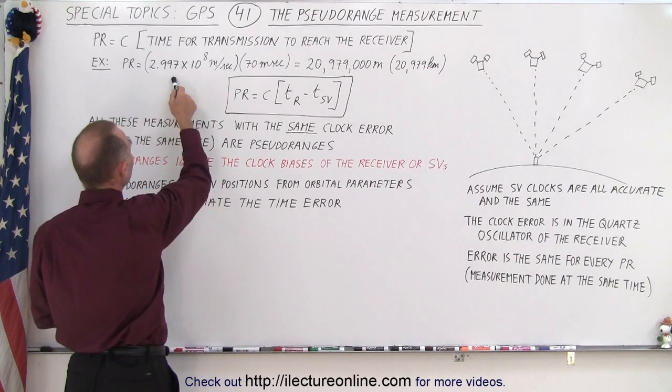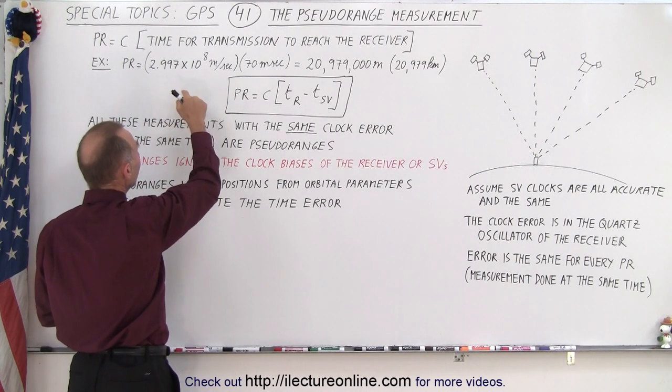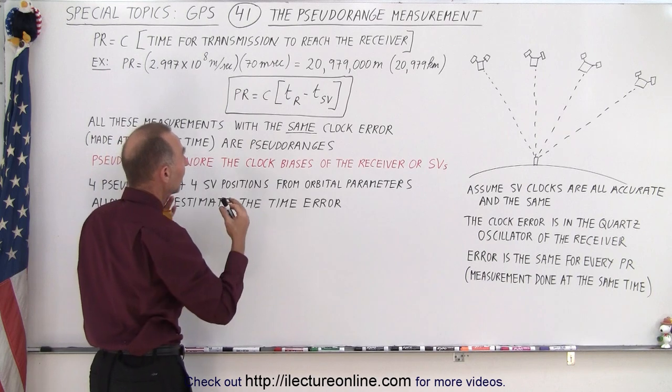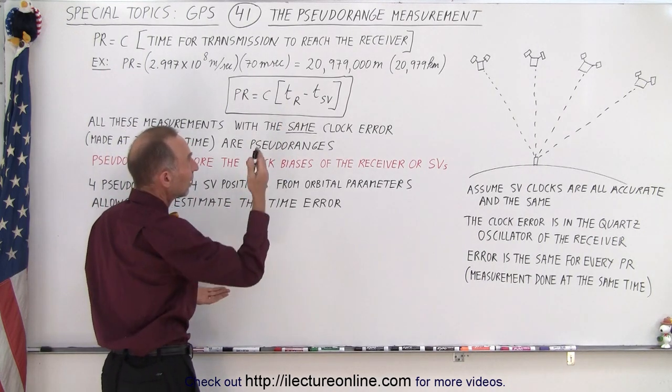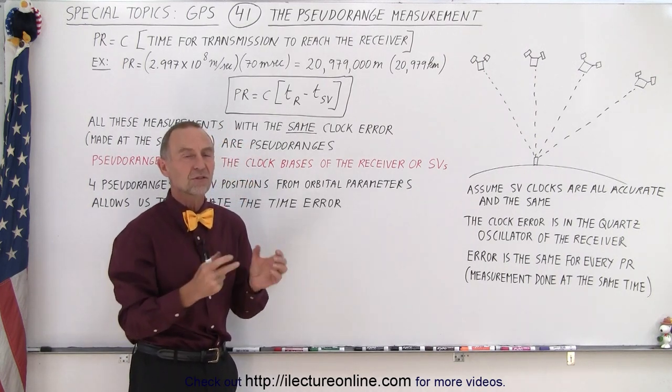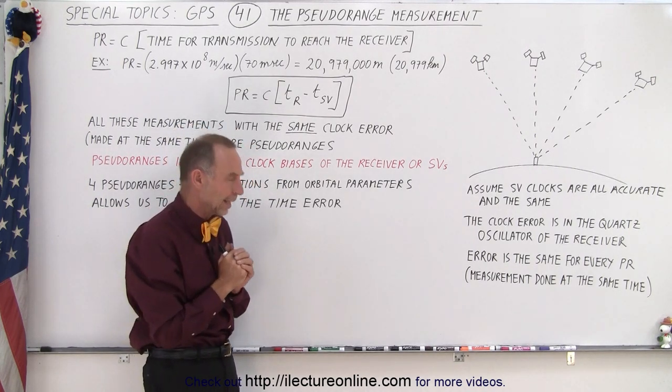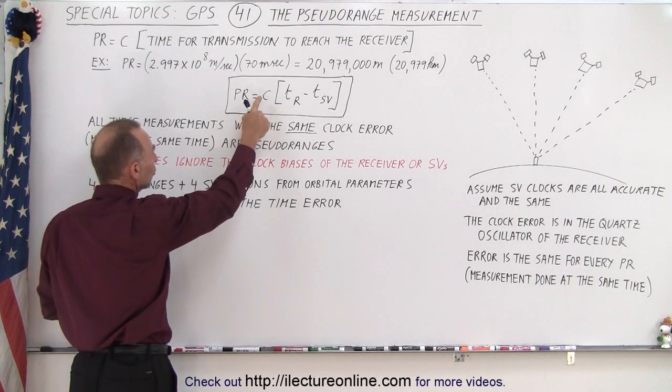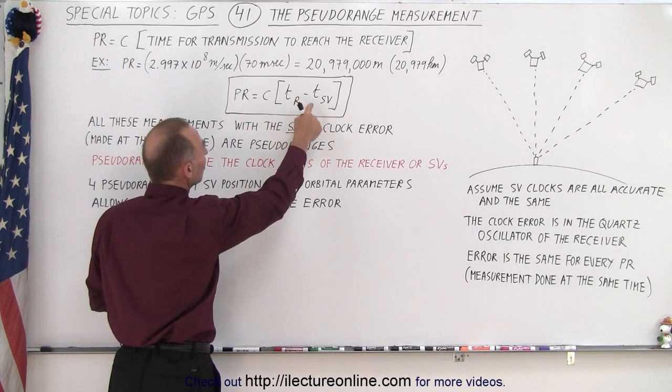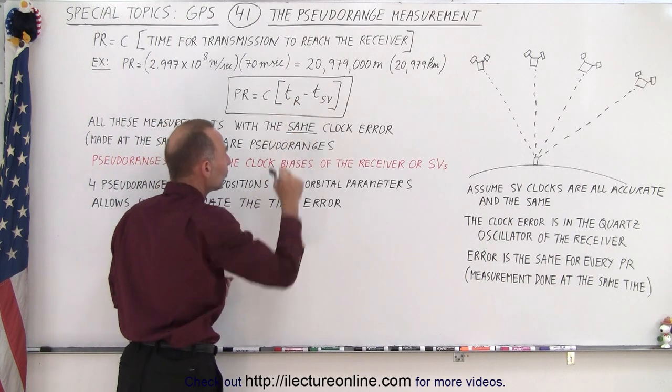For example, if we take the speed of light to be 2.997 times 10^8 meters per second, times 70 milliseconds for a transmission to take place, that puts it at about 21,000 kilometers distance. So you can get reasonably close like that. So the general equation is that the pseudorange is equal to the speed of light times the difference in the time of the receiver and the space vehicle.